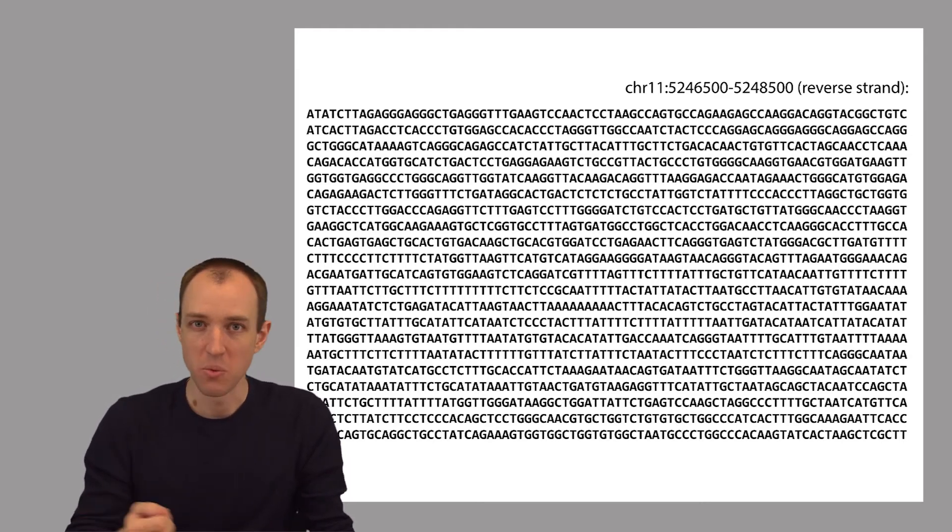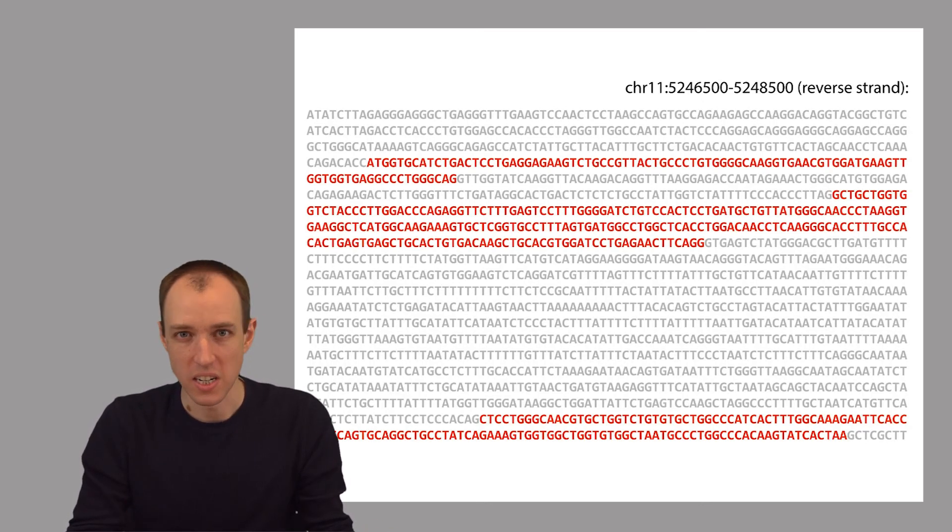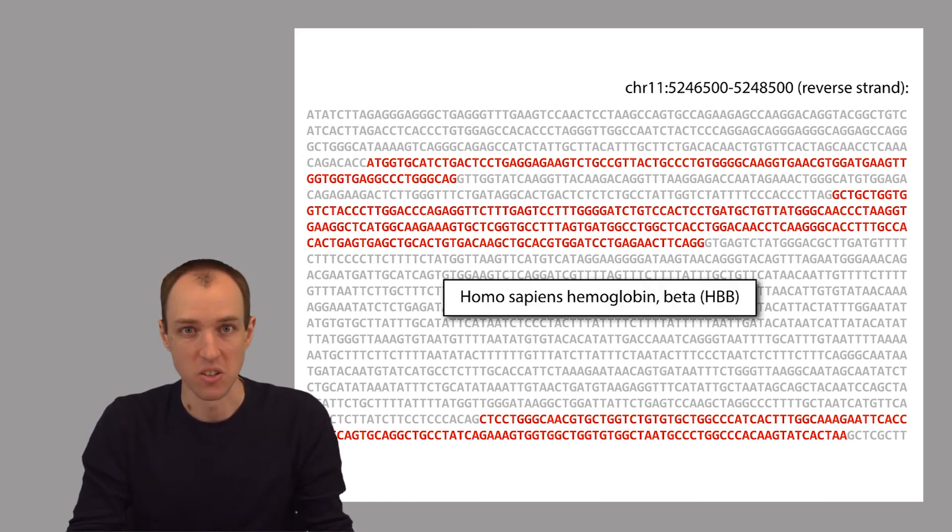Now when we look at this string, we don't really understand it. We don't know what this means. Is this one of those recipes we talked about before? Is this maybe many recipes together? It's not really clear. In fact, there is one gene in the middle of this sequence here, which I've highlighted here in red. And this gene is called HBB. And you can see it's spread across the genome in a few different pieces.